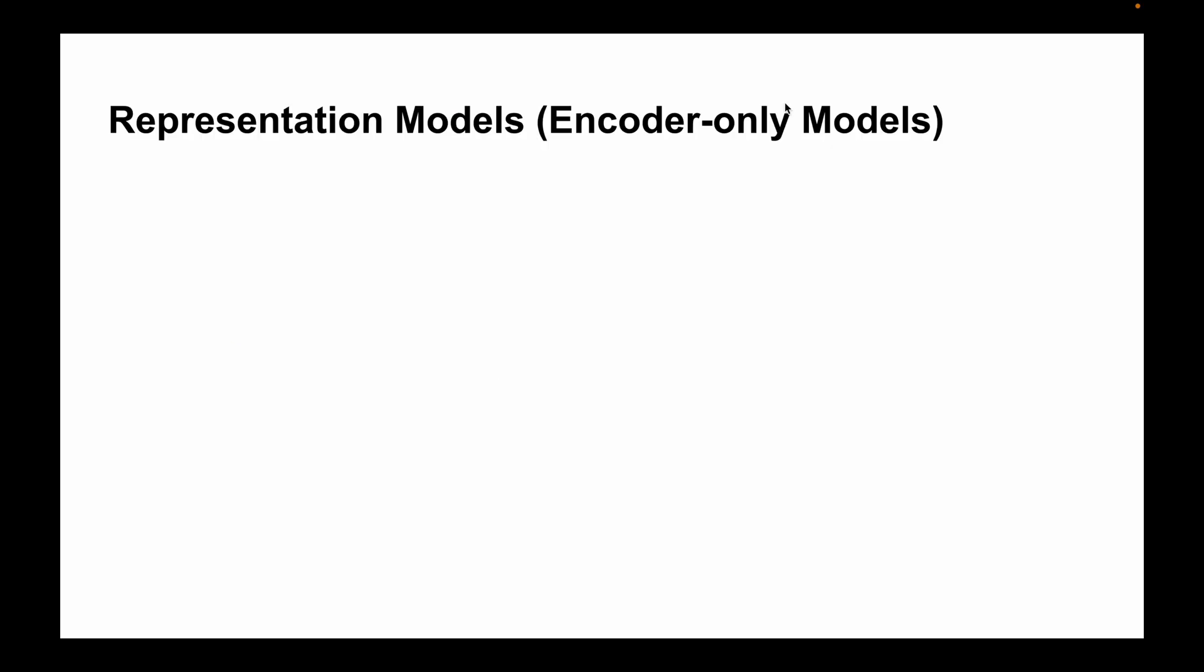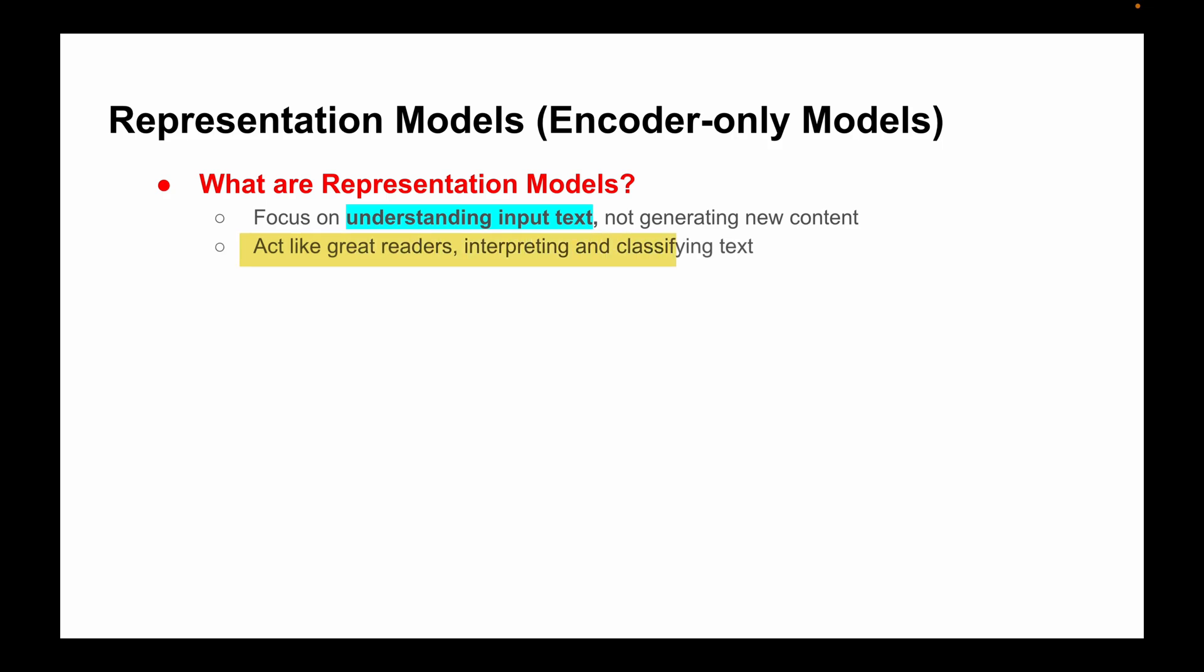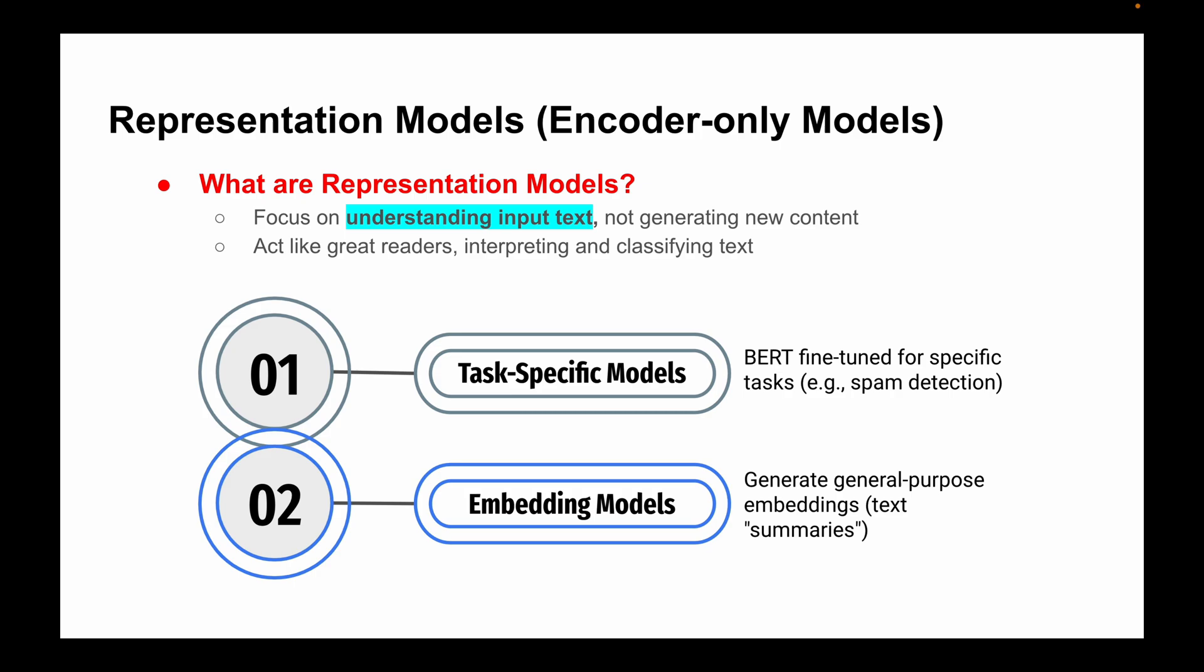Let's start with representation models, also known as encoder-only models. What does this mean? These models focus on understanding the input text without generating any new content. They're like great readers, focusing on reading and understanding text to classify it properly. There are two main types of representation models used for text classification.